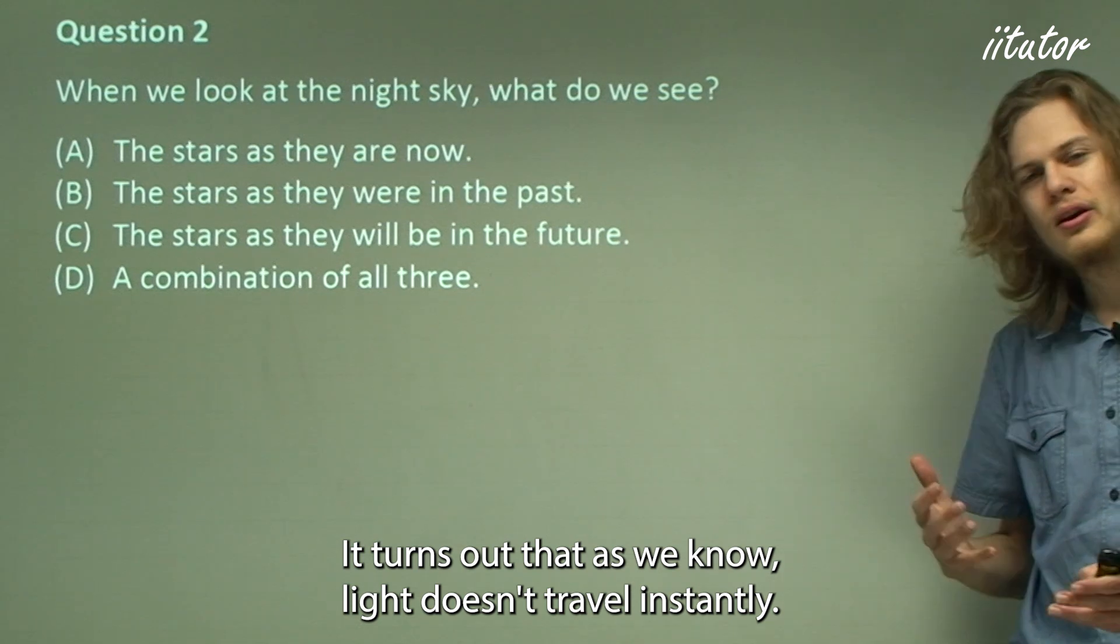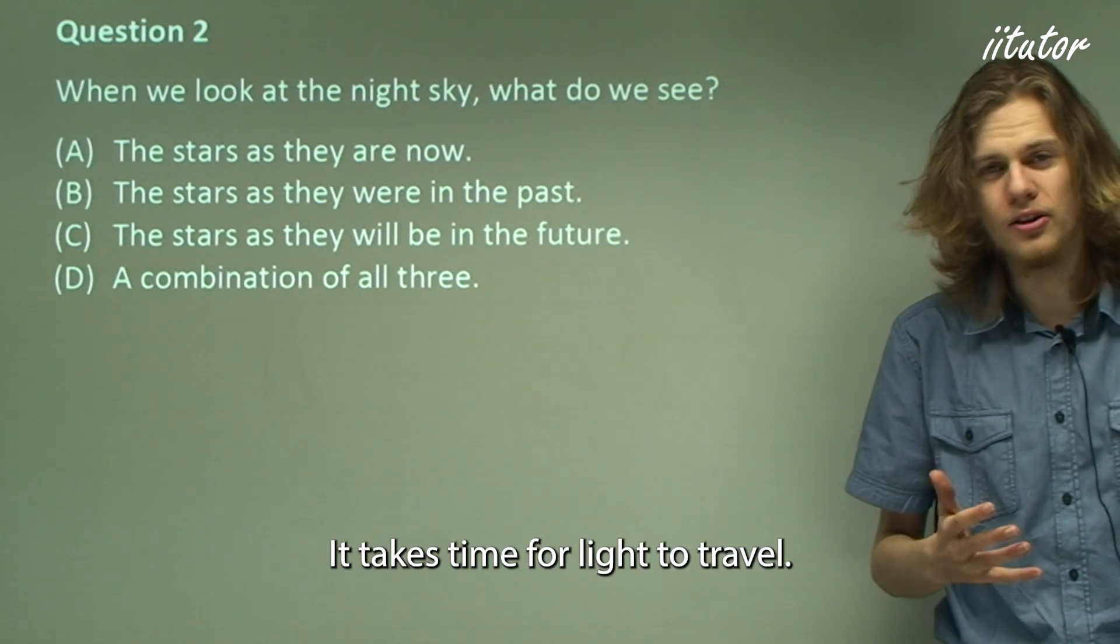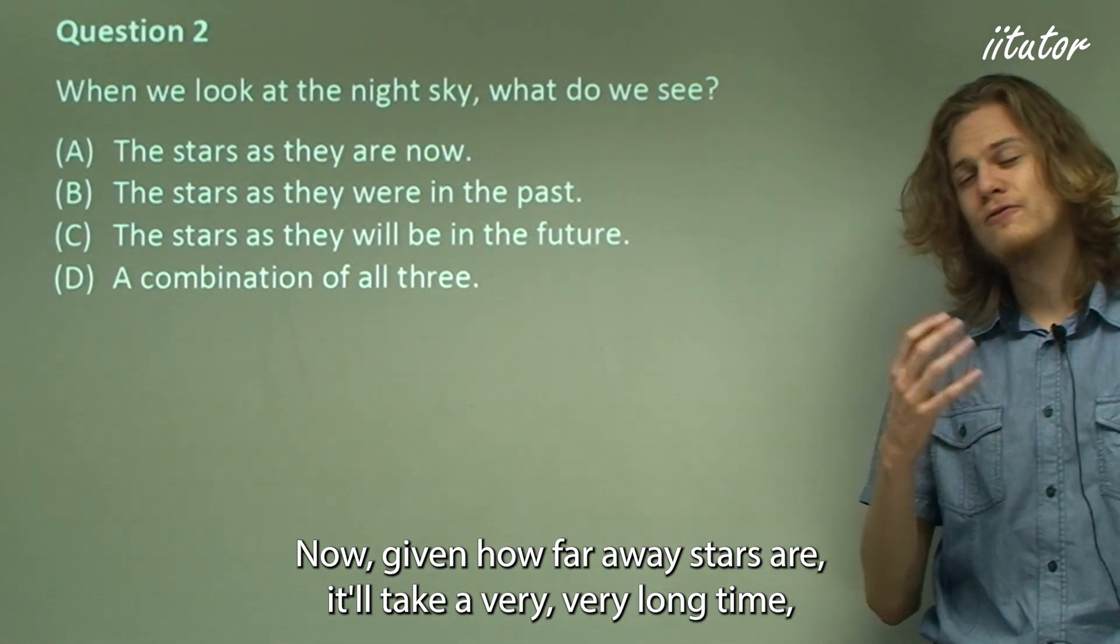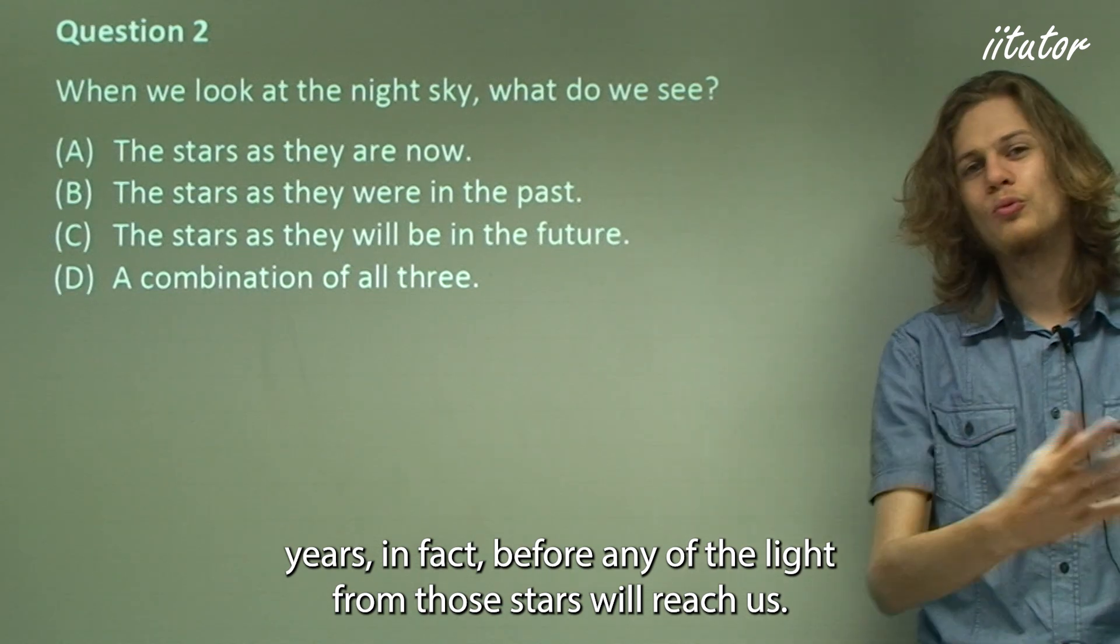Well it turns out that, as we know, light doesn't travel instantly. It takes time for light to travel. Now given how far away stars are, it'll take a very long time, years in fact, before any of the light from those stars will reach us. So in fact when we look up into the sky, we're looking not at the star as it is now, but at the light of the star that it gave off four or five years ago.